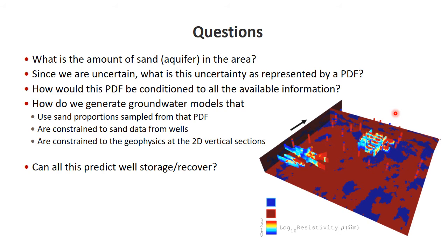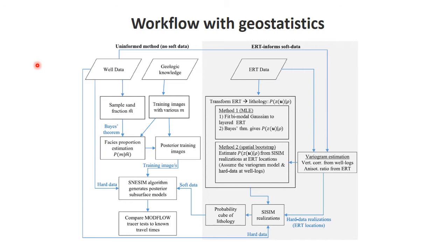Once we have that uncertainty, we must deal with the second uncertainty: the spatial distribution of these channel formations. We again run into the problem of needing to constrain to the observations. The student developed a workflow addressing all these elements. There's a spatial bootstrap part, then the modeling part where a training image is used to generate groundwater models. There's hard data — often referred to as well data because they're direct observations — and soft data, which is essentially geophysical data. Other methods include sequential indicator simulation, and many of these methods will be covered in the next sessions.